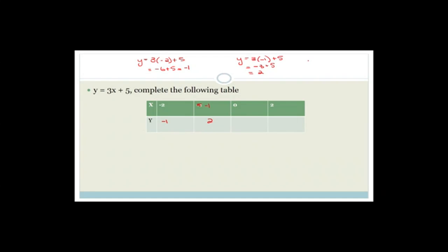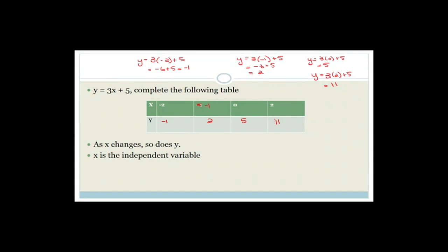If x = 0, then y = 3(0) + 5 = 5. If x = 2, then y = 3(2) + 5 = 11. So what am I proving? As x changes, so does y. X is called the independent variable — the one we're changing. Y is the dependent variable. For every x value, there is one and only one y value. When x = −2, we get y = −1, not two options.